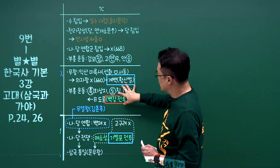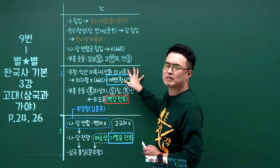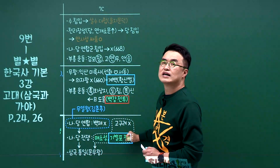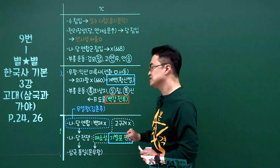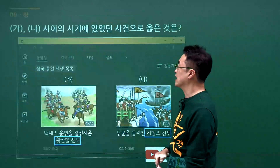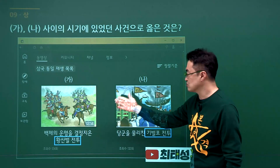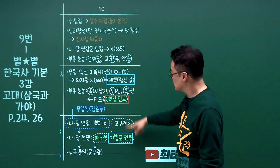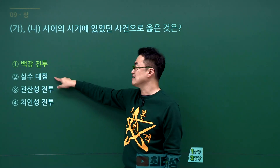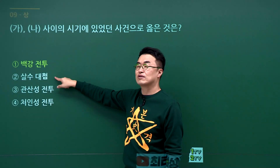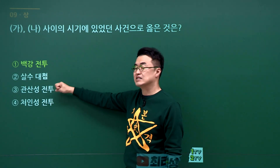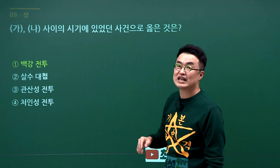백제 멸망과 삼국통일 과정 문제입니다. 계백이 황산벌에서 마지막 전투를 했고 백제가 멸망했습니다. 백제 부흥운동이 있었고 그 부흥운동이 백강전투입니다. 고구려도 멸망시킨 후 나당 전쟁이 벌어지고 기벌포 전투가 있습니다. 가에서 나 사이의 사건은 황산벌 전투와 기벌포 전투 사이이므로 백강전투가 정답입니다. 살수대첩은 황산벌보다 이전이고 처인성 전투는 고려시대입니다. 정답은 1번입니다.